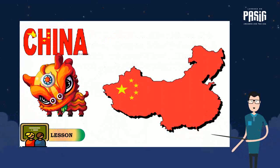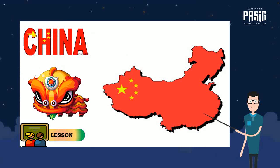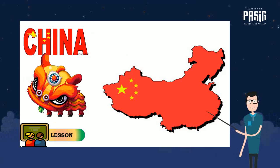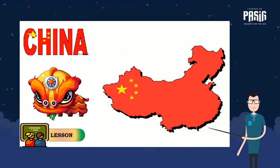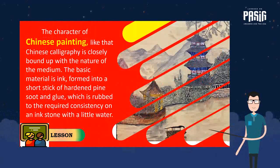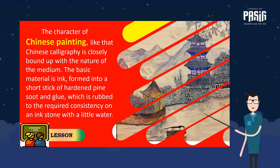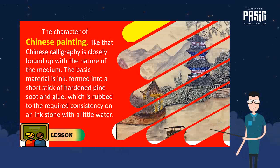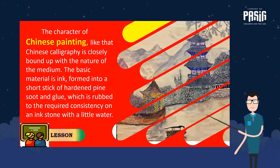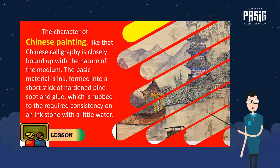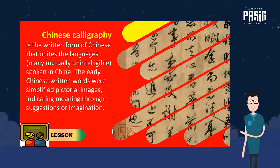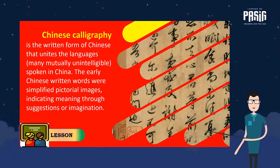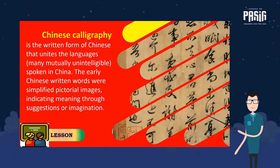I will showcase different arts and crafts in East Asia and analyze what elements and principles of art are evidently shown. Let's begin with Chinese art. The character of Chinese painting, like Chinese calligraphy, is closely bound up with the nature of the medium. The basic material is ink, formed into a short stick of hardened pine soot and glue, which is rubbed to the required consistency on an ink stone with a little water. Chinese calligraphy is the written form of Chinese that unites the languages spoken in China, and early Chinese written words were simplified pictorial images indicating meaning through suggestions or imagination.